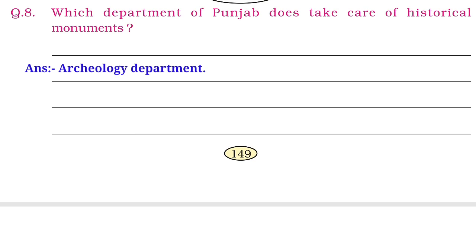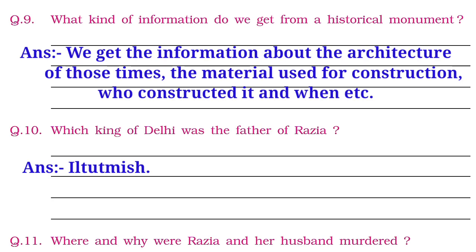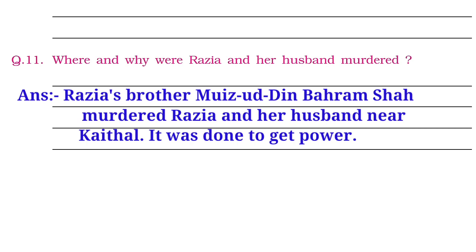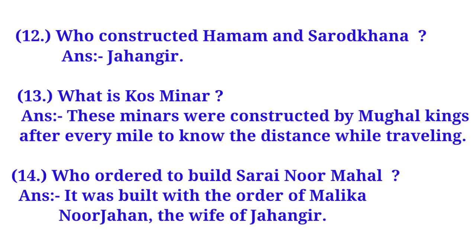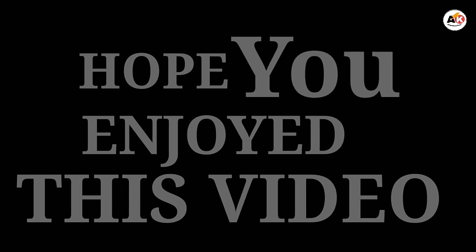Question 8: Which department of Punjab takes care of historical monuments? Answer: Archaeology Department. Question 9: What kind of information do we get from a historical monument? Answer: We get information about the architecture of those times, the material used for construction, who constructed it and when. Question 10: Which king of Delhi was the father of Razia? Answer: Tutmish. Question 11: Where and why were Razia and her husband murdered? Answer: Razia's brother Maazuddin Behram Shah murdered Razia and her husband near Kethal to get power. Question 12: Who constructed Hammam and Shrood Khana? Answer: Jahangir. What is Kos Minar? These minars were constructed by Mughal kings after every mile to know the distance while traveling. Who ordered to build Sarai Noor Mahal? It was built with the order of Malika Noor Jahan, wife of Jahangir. We have done this lesson. Thank you so much for watching.